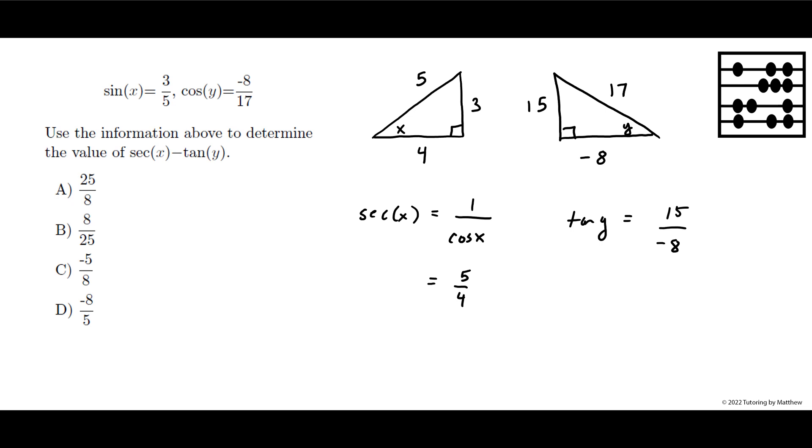Secant of x is 5 fourths minus 15 over minus 8. The two negatives cancel and making a common denominator, 10 over 8 plus 15 over 8 is 25 over 8, or letter A.